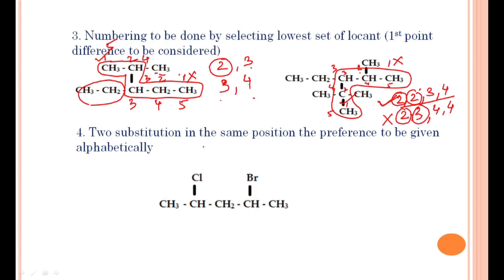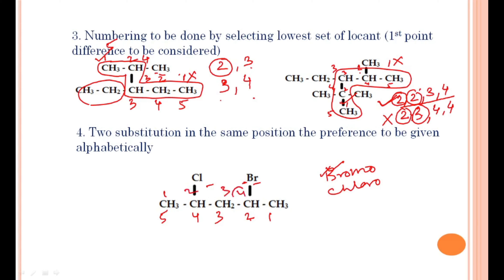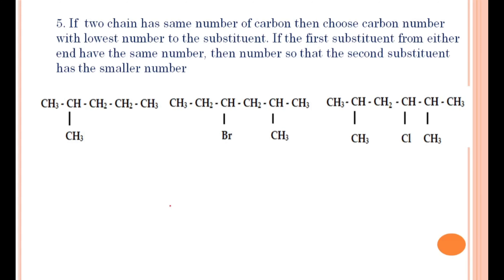If two substituents are of similar preference — for example, chlorine and bromine, both halogens — we give the numbering alphabetically. 'Bromo' (B) comes before 'chloro' (C) alphabetically, so bromine must receive the lowest number. Numbering should be chosen such that bromine gets the lower position number. If one numbering gives bromine position 2 and another gives it position 4, we choose the first as correct.